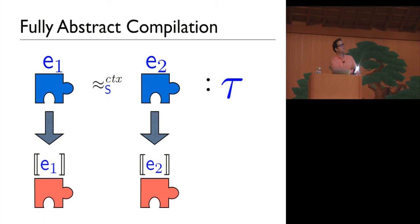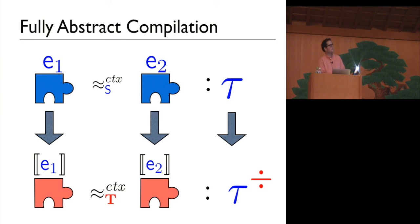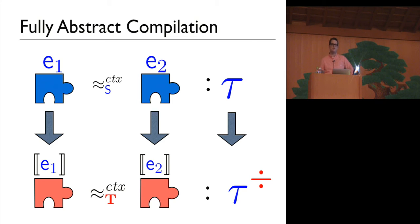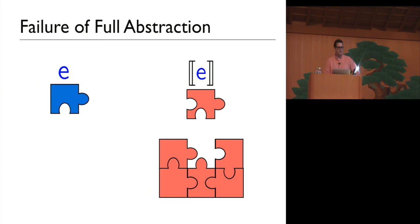Given two source programs that are indistinguishable at type tau, there's a target language type tau' — the representation of the source interface in the target language — so that the compiled programs are indistinguishable by target language context at this type tau'. I can change the representation of my abstract data type and won't break client code written in the target language, and target language attackers can't distinguish private fields that are not exposed. Now let's look at why most compilers fail to be fully abstract.